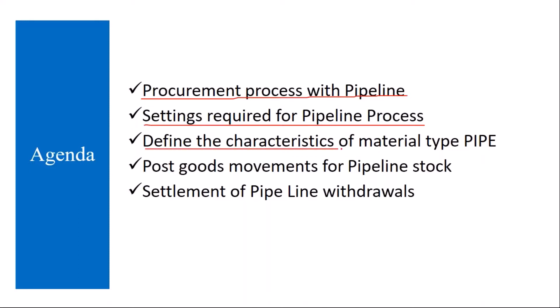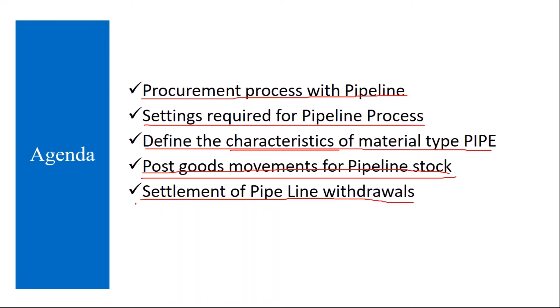We will define the characteristics of material type PIPE — there is a material type called PIPE and we will see how it is used and what its characteristics are. We will also cover how to post goods movements for pipeline stock, and then the settlement of pipeline withdrawals — how the settlement is done for invoices and payment to the vendor. These are the topics we will be covering in the pipeline.